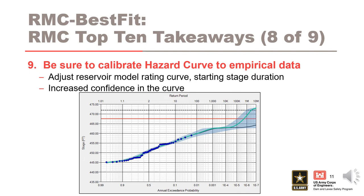Number nine is to calibrate the flood hazard curve to the empirical stage data. To calibrate the flood hazard curve, be sure to adjust the reservoir model spillway rating curve in RMC RFA within the water control manual rules. At times, adjustments of other input data and analyses, such as the starting stage duration analysis, may be necessary. When we do calibrate the observed stage data, we increase our confidence in the extrapolated portion of the curve.